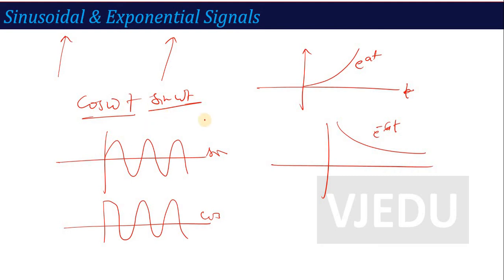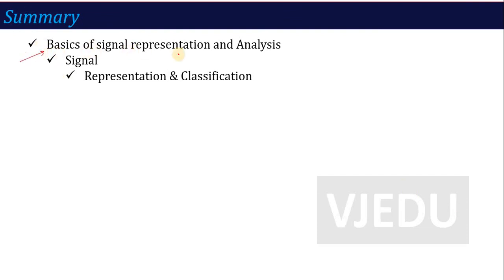For signal analysis, we use the Fourier transform, Z-transform, Laplace transform, and various other transforms or domains to analyze signals. In communication, we mainly use the Fourier domain — the Fourier transform — to show the spectrum of a signal, which we call signal analysis. The frequency response obtained via Fourier transform is what we call the analysis of a signal.